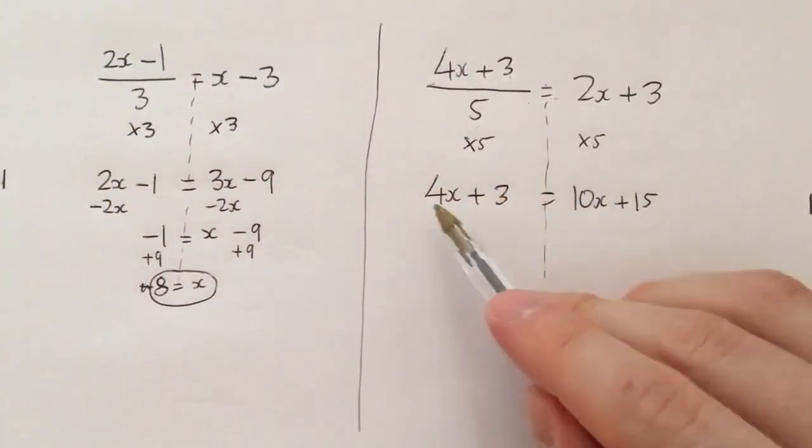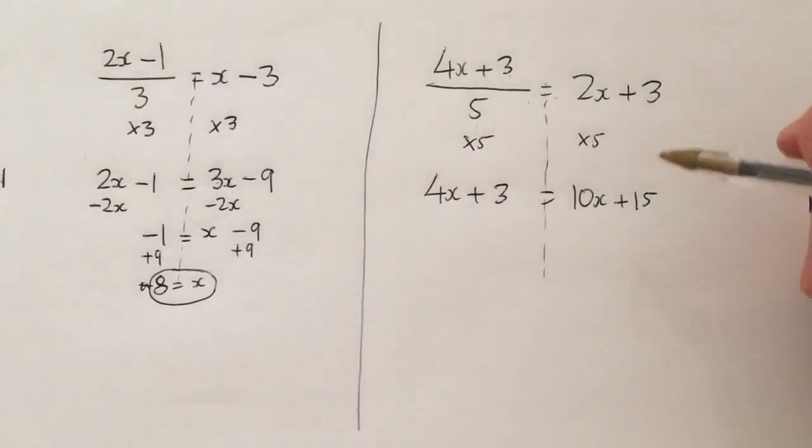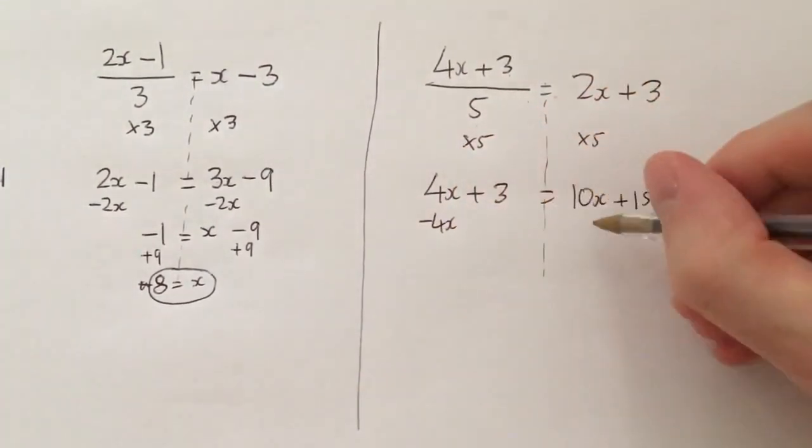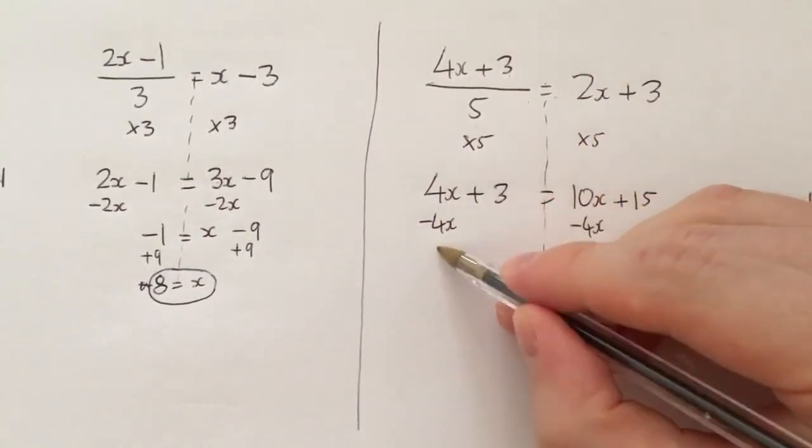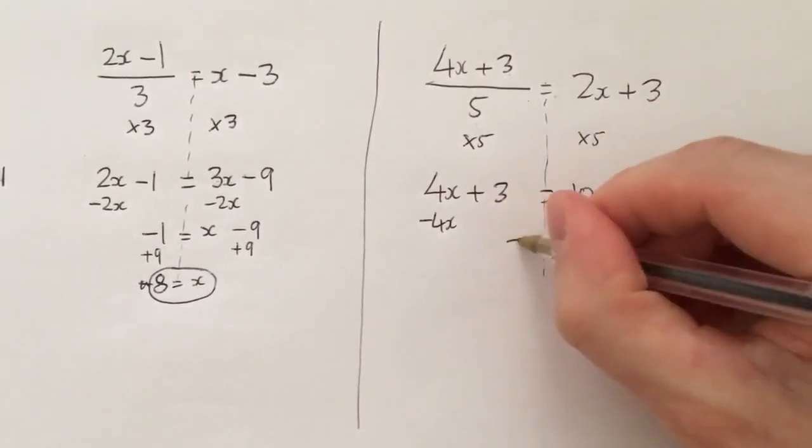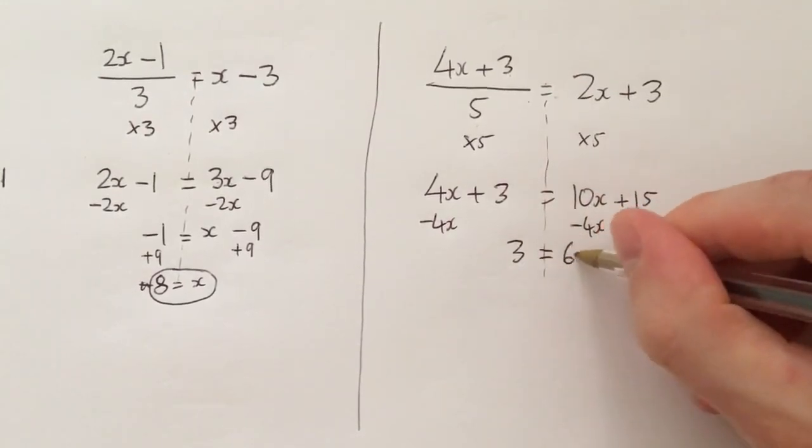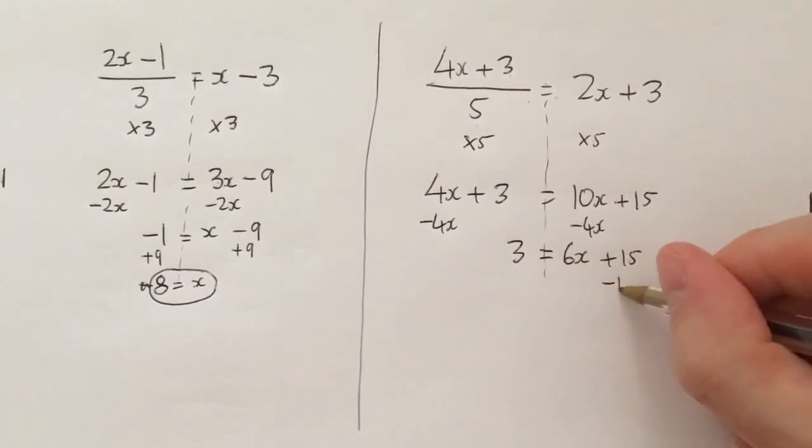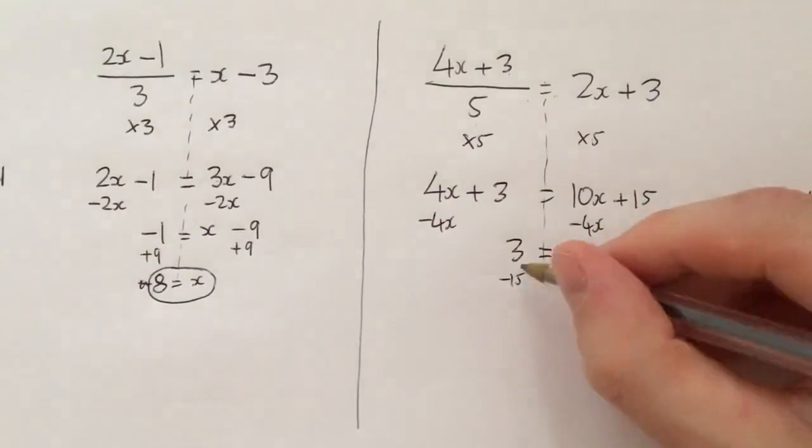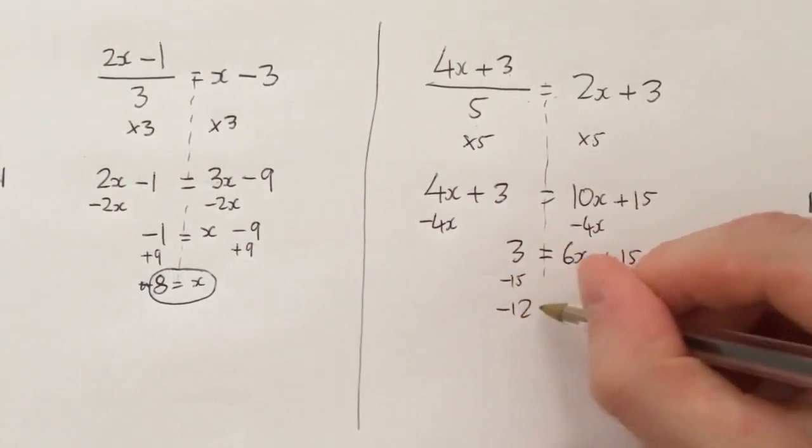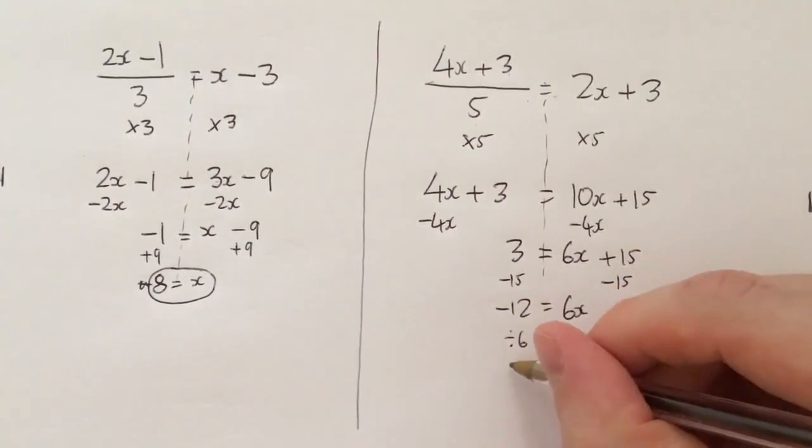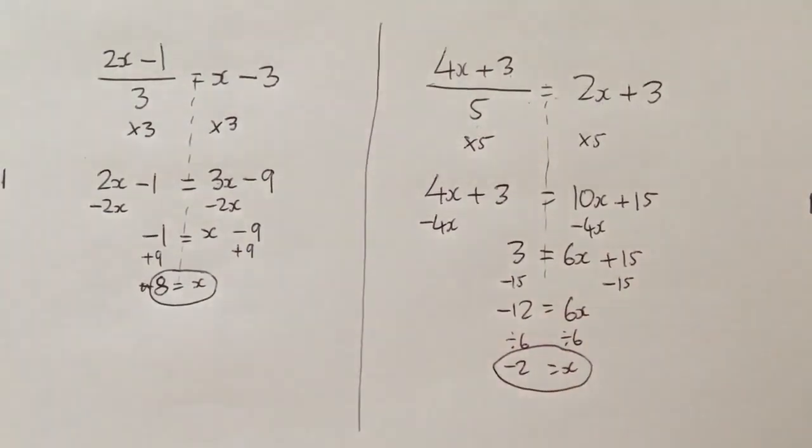Same thing here, we're now looking just at a simple unknowns on both sides equation. Let's find the smaller value, the smaller coefficient in front of x. That's 4, so I will take away 4x because that's positive, so I do the inverse, take away 4x. So that becomes 0, don't need to write it down. That's positive 3. 10x take away 4x is 6x plus 15. To get 6x by itself I will minus 15, minus 15. 3 minus 15 is negative 12 equals 6x. Divide by 6, divide by 6. Negative 2 equals x, final answer.